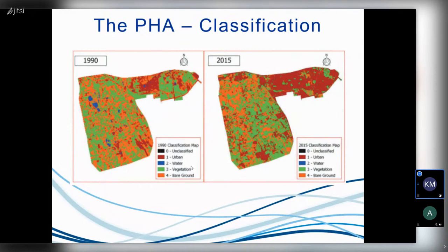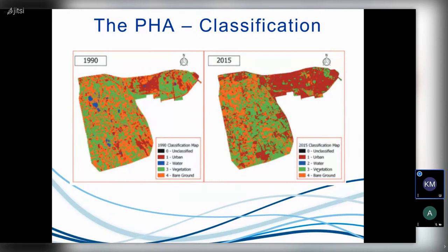In 1990, we had water in some areas, vegetation as seen in the other images, and bare ground. We were actually able to distinguish bare ground from urban land cover. In 2015, urban land cover had significantly increased. We still have vegetation, ongoing activity, and water. This gives better accuracy in terms of mapping compared to the indices on the previous slide.